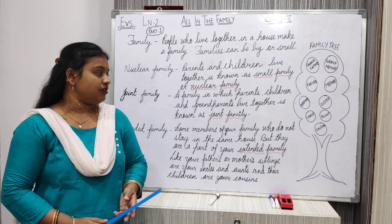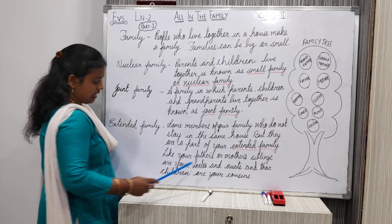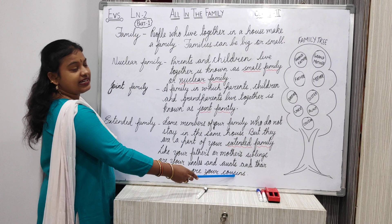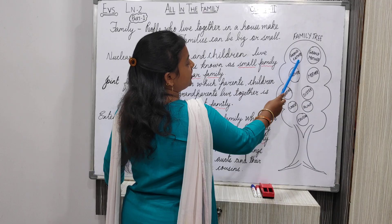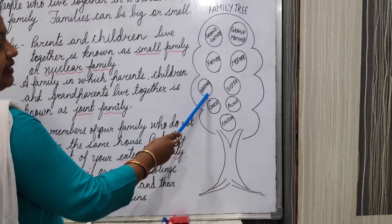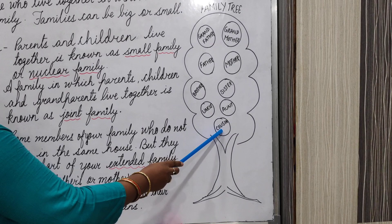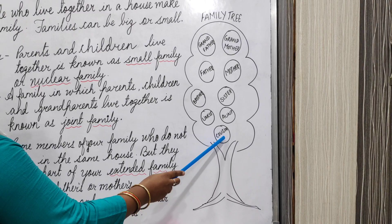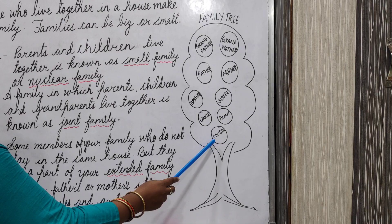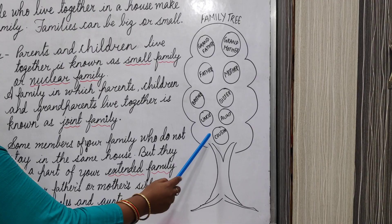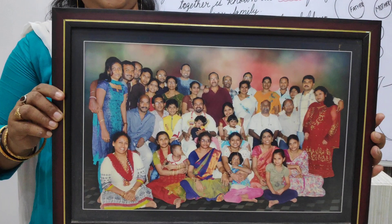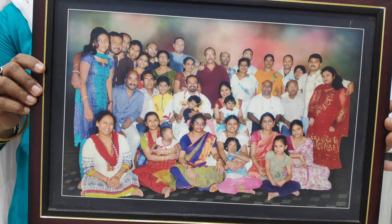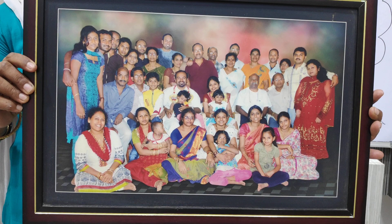Your father's or mother's siblings are your uncles and aunts, and their children are your cousins. Now you can make a family tree of yourself, of your family. Here I have made a tree and written grandfather, grandmother, father, mother, brother, sister, uncle, aunt, and cousins. You can paste some pictures and discuss with your family about your family tree. I have a picture to show you — this is an extended family. They are a part of our family but they don't stay with us in our home. This type of family members are known as extended family members.